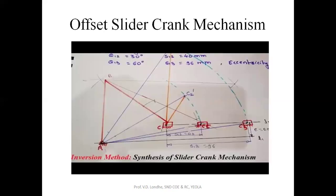Now we will see the inversion method for the offset slider crank chain mechanism. Here the problem has been solved. A reference point A is taken anywhere in the plane. For the offset slider crank mechanism, as the name indicates, there is some offset or eccentricity. The offset eccentricity is given as 20 mm in this problem.